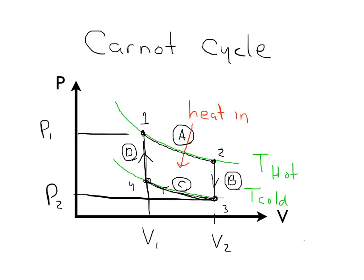For Part B, the isochoric decrease in pressure, for the volume to stay constant and the pressure to go down, we're going to have to take heat out. For the isothermal process along T-cold, we're going from a larger volume to a smaller volume, so we're compressing the gas. We're going to have to take heat out to ensure that it stays at a constant temperature.